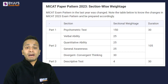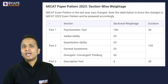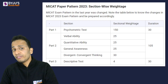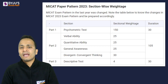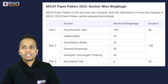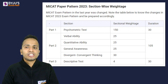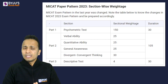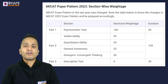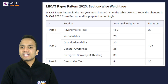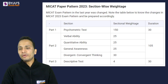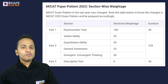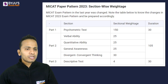Part two has four different sections: verbal ability with 25 questions, quantitative ability with 25 questions, general awareness with 25 questions, and convergent and divergent thinking with 30 questions. For all these four sections you will get a total of 105 minutes. The third part is descriptive writing, with a sectional weightage of four and a duration of 30 minutes.